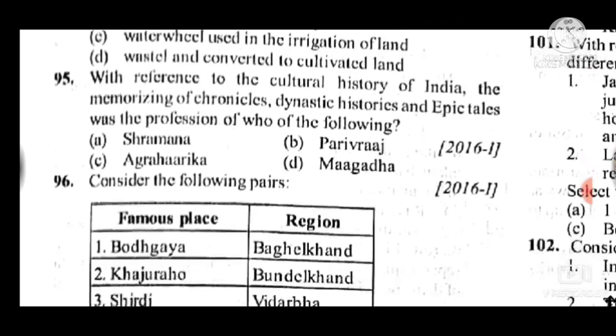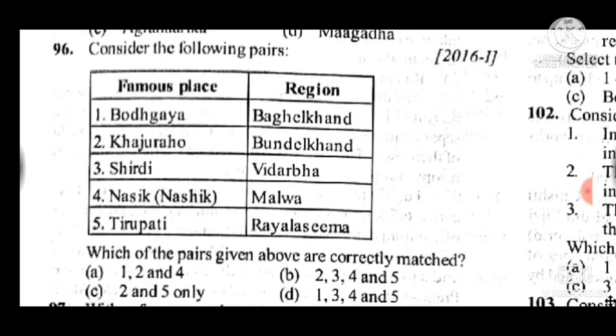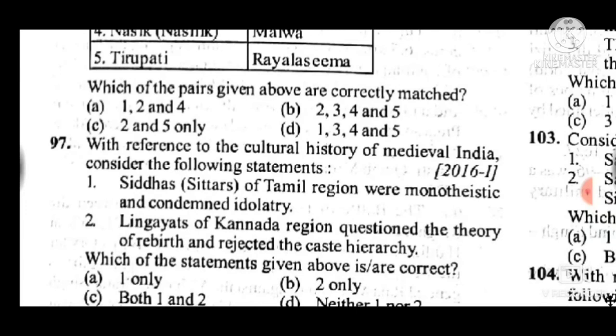Question 96: Consider the following pairs — answer is C, two and four only are correctly matched. Question 97: With reference to cultural history of medieval India — both one and two statements are correct: the Saiva saints of the Tamil region were monotheistic and condemned idolatry; and the Lingayats of Karnataka questioned the theory of rebirth and rejected the caste hierarchy. Answer is C.